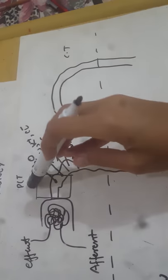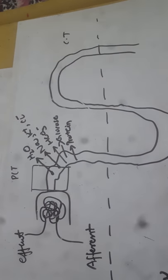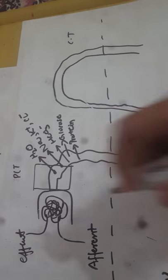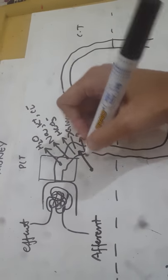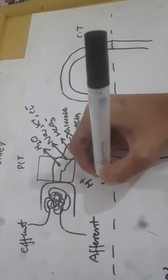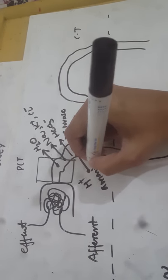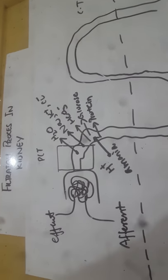Just remember that everything is reabsorbed from the proximal convoluted tubule. The only things that are secreted — meaning going from circulation into the proximal tubule — are hydrogen ions and ammonia. These two things are secreted into the renal proximal tubule.